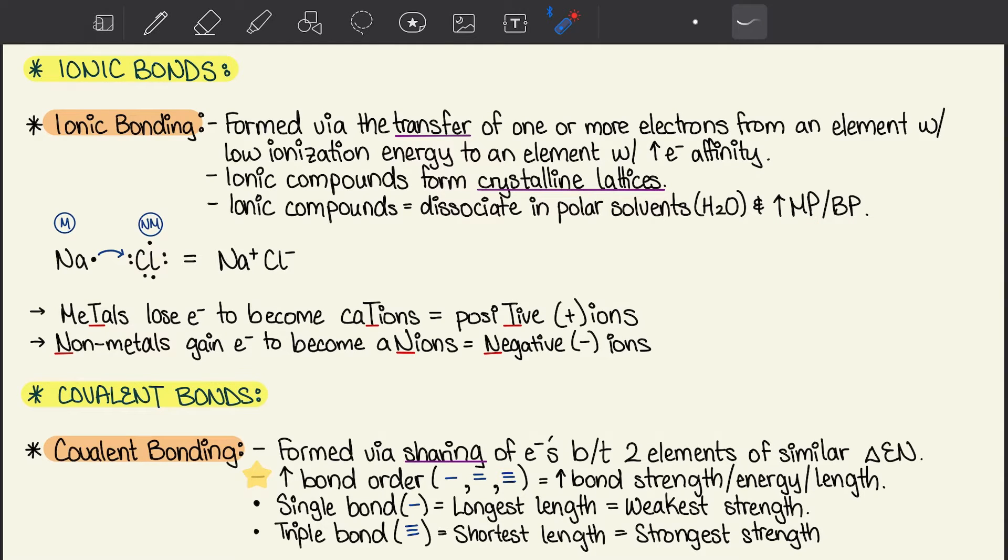Down here, I've given an example of NaCl. You have sodium, which is a metal, and chlorine, which is a nonmetal, and together it forms sodium chloride. This is a transfer of an electron. Sodium has low ionization energy, so it gives its electron to Cl, which has high electron affinity. A fun way to know this is that metals lose electrons to become cations. Remember the T becomes a positive sign. And nonmetals gain to become anions. The N in anions is for negative ions.